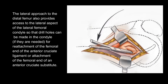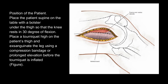The lateral approach to the distal femur also provides access to the lateral aspect of the lateral femoral condyle so that drill holes can be made in the condyle if they are needed for reattachment of the femoral end of the anterior cruciate ligament or attachment of the femoral end of an anterior cruciate substitute.